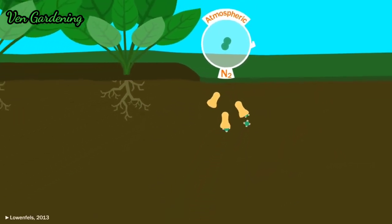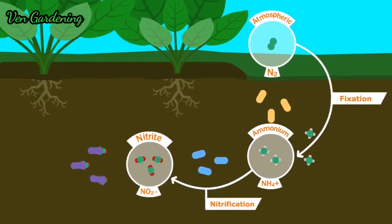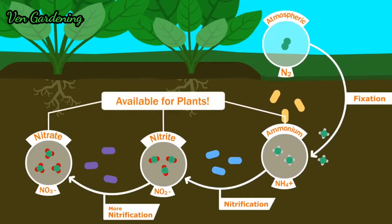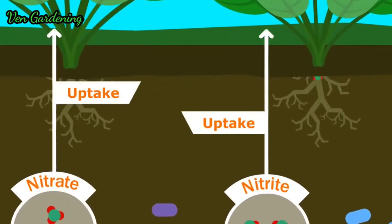Various species of bacteria eat atmospheric nitrogen and poop out ammonium. This gets eaten by other kinds of bacteria, which poop out nitrite, which gets eaten by yet another kind of bacteria, which poops out nitrate. All of these forms of nitrogen are available for plants, especially nitrate, which is the easiest for plants to use.